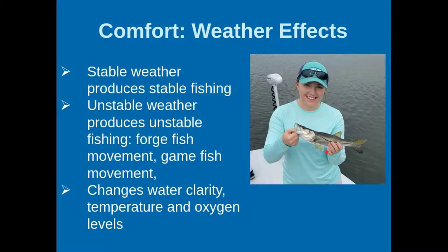Forage fish are going to move — this is what that old wise fisherman was talking about. He doesn't care where the fish are; he only cares where the bait fish are. You'll also see changes in water clarity, particularly after a heavy rain. Temperature and oxygen levels will also change. One thing about oxygen levels and rain: rain actually does increase O2 levels. So if you get a really good thunderstorm moving through in August when temperatures have been very high, it would be a really good time to go fishing right after that thunderstorm.